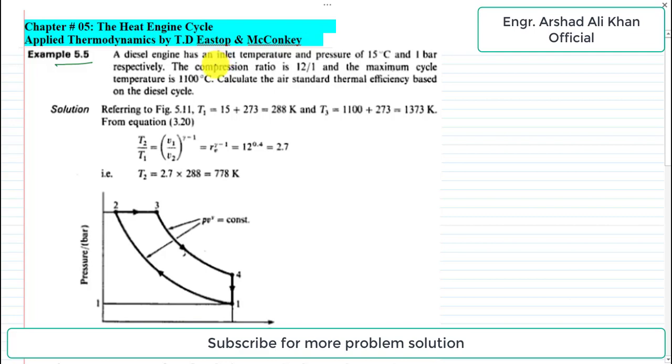Example 5.5 is based on diesel engine cycle. A diesel engine has an inlet temperature and pressure of 15 degrees C and 1 bar respectively. The compression ratio is 12 by 1 and the maximum cycle temperature is 1100 degrees centigrade. Calculate the air standard thermal efficiency based on the diesel cycle.